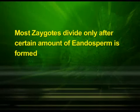Now let us discuss the embryo. Embryo develops at the micropylar end of the embryo sac, where the zygote is situated. Most zygotes divide only after a certain amount of endosperm is formed. This is an adaptation to provide assured nutrition to the developing embryo. Though seeds differ greatly, the early stages of embryo development, called embryogeny, are similar in both monocotyledons and dicotyledons.